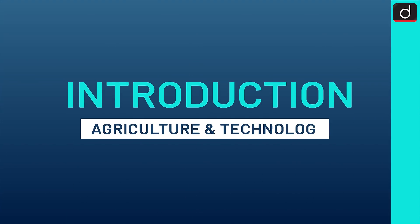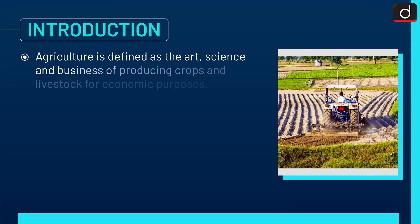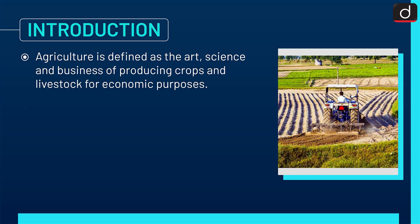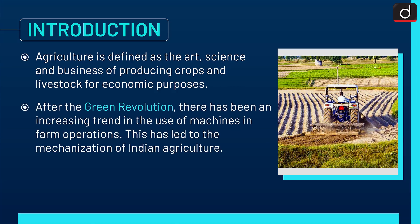Let's begin with a brief introduction. Agriculture is defined as the art, science, and business of producing crops and livestock for economic purposes. After the Green Revolution, there has been an increasing trend in the use of machines in farm operations, which has led to the mechanization of Indian agriculture.